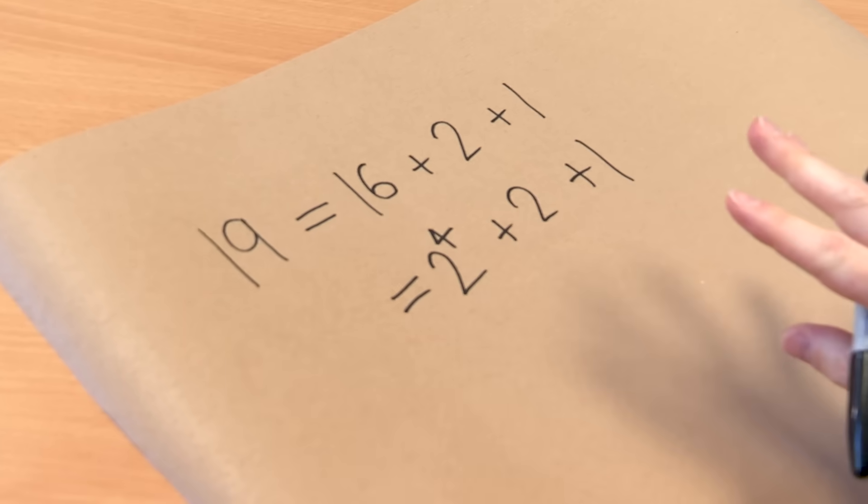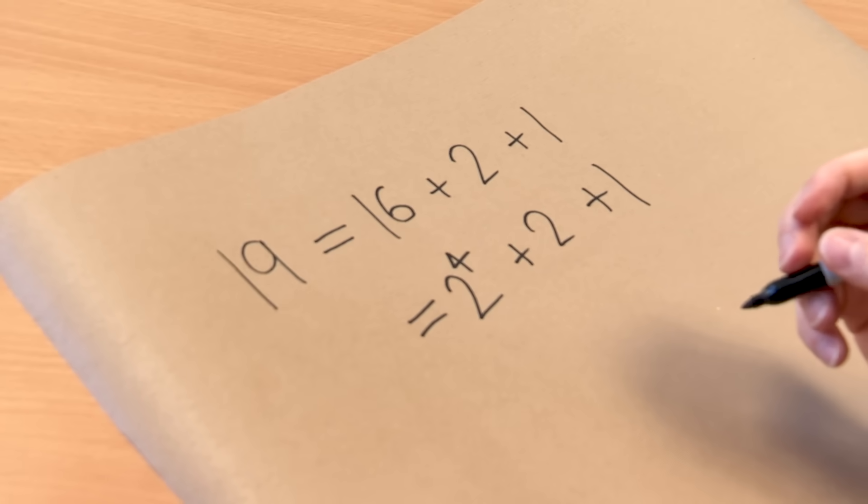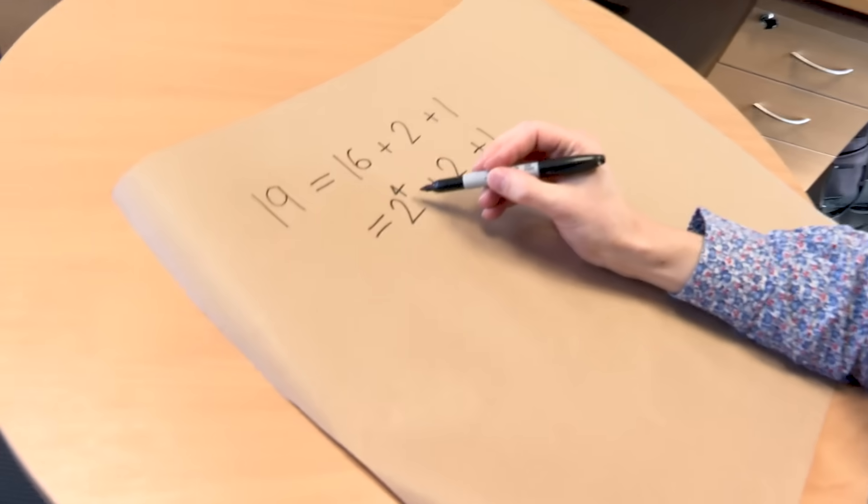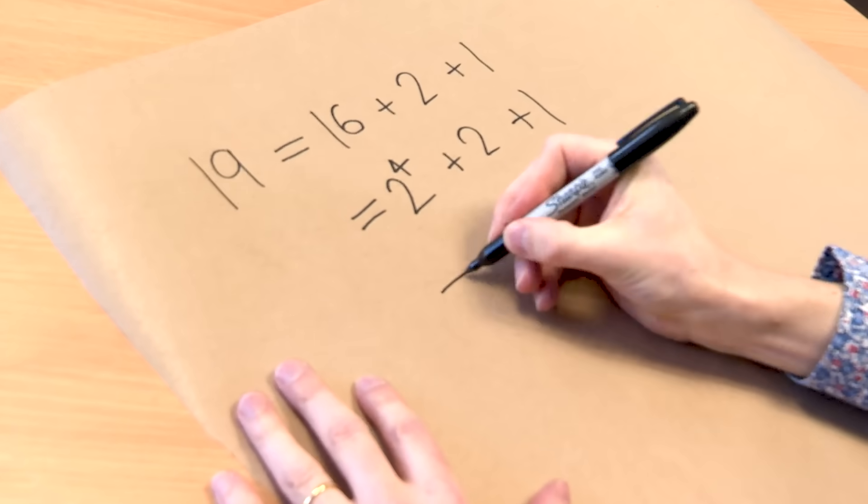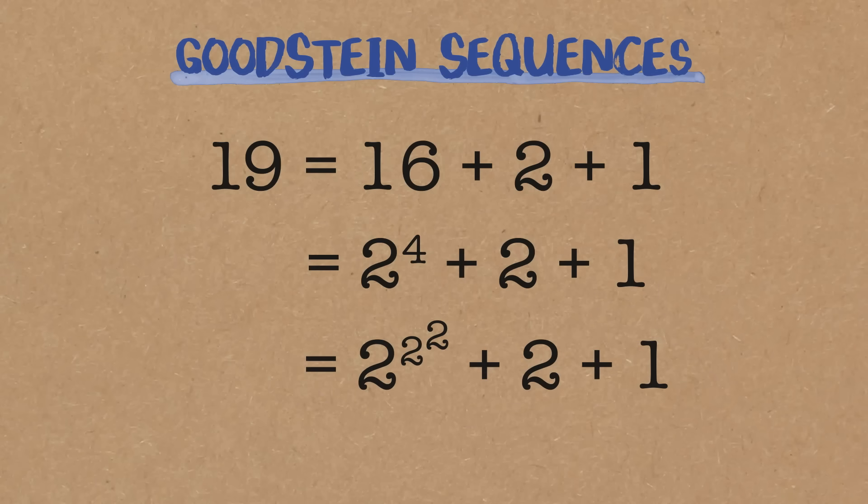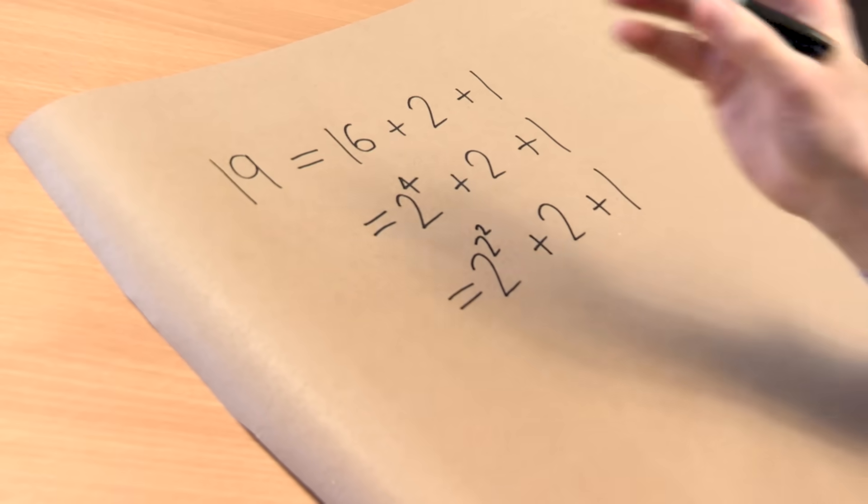So we've written it in base 2, but I want to go a little bit further. We want to write it in what is technically called hereditary base 2. What that means is really, when I look at this, all I want to be able to see is 2s and 1s. And here you can see I can see a 4, so we're going to get rid of that. I'm going to rewrite that 4 as 2 squared, so we get 2 to the 2 to the 2 plus 2 plus 1. So we've set it up and ready to go.